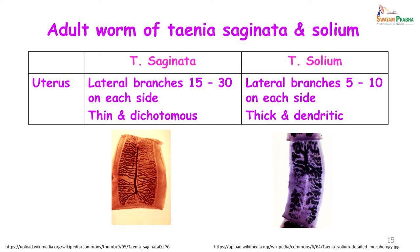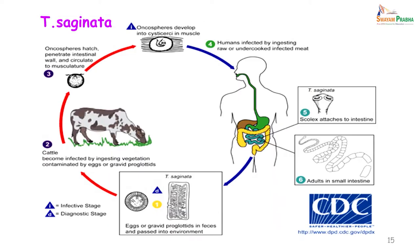Another method of differentiating Taenia saginata and Taenia solium is by looking at the uterus. In Taenia saginata the uterus has 15 to 30 lateral branches which are thin and dichotomous, whereas in Taenia solium the lateral branches are fewer — 5 to 10 on each side — and they are thick and dendritic.